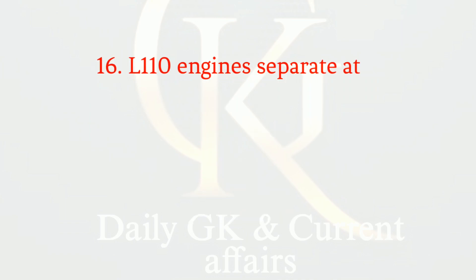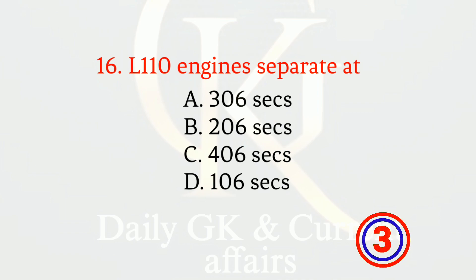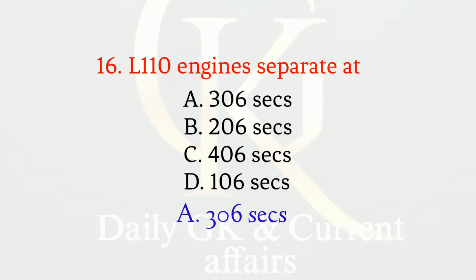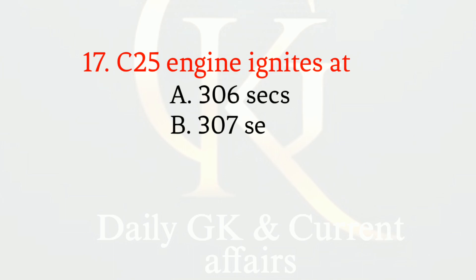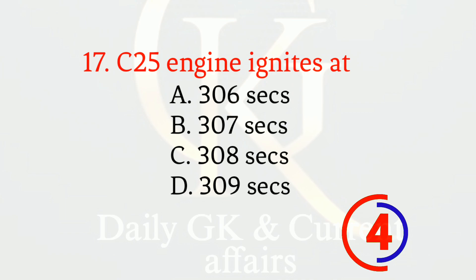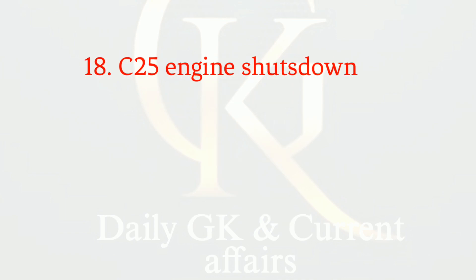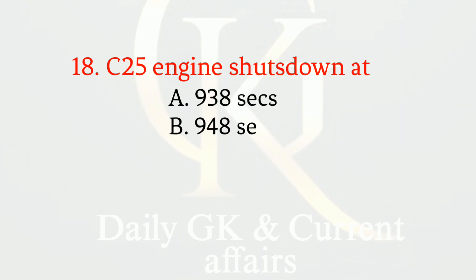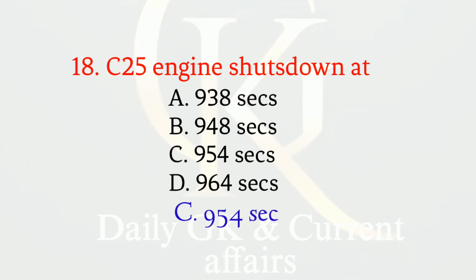L110 engines separate at — the correct option is A: 306 seconds. C25 engine ignites at — the correct option is C: 308 seconds. C25 engines shut down at — the correct option is C: 954 seconds.